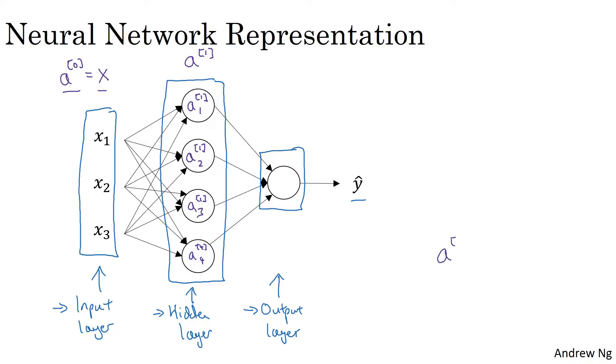And so A superscript square bracket 1, this is a four-dimensional vector. Or if you want in Python, this will be a four-by-one matrix or four-column vector, which looks like this. And it's four-dimensional because in this case, we have four nodes or four units or four hidden units in this hidden layer.